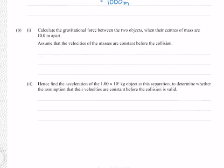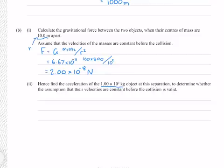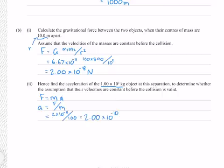Calculate the gravitational force between the two objects when their centres of mass are 10 metres apart, assuming constant velocities before collision. Using F = Gm₁m₂/r², with r = 10 m, gives 2.00×10⁻⁸ newtons to 3 significant figures. Hence find the acceleration of the 1×10² kg object at this separation. Using F = ma, acceleration = F/m = 2.00×10⁻¹⁰ m/s². This acceleration is very small, so the assumption that velocities are constant before the collision is valid.